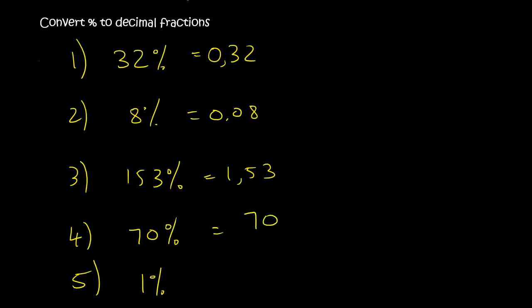70%: step one, write it over 100. Then take your decimal place two places: 1, 2. And so you end up with comma 70. There's nothing in the front, so you just fill in a zero. Your answer is 0,70.